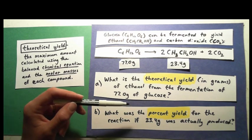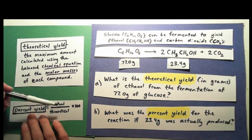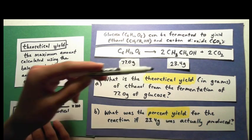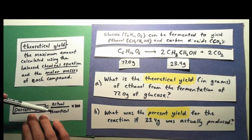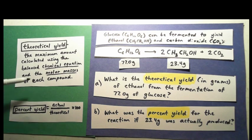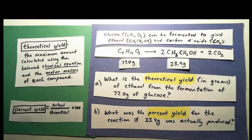The percent yield is just what you actually got — which is 23.4 grams — divided by what you calculated given the balanced equation and the molar masses of each compound. You multiply that by 100 and you get the percent yield. So let's work on part A: let's get the theoretical yield.